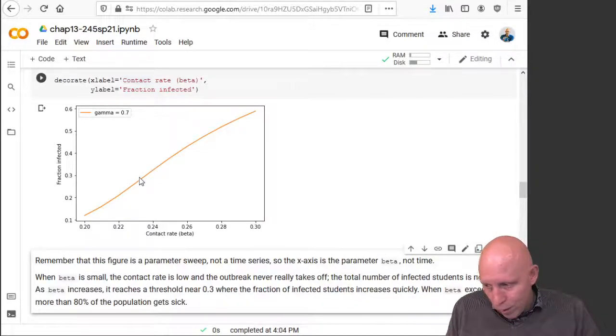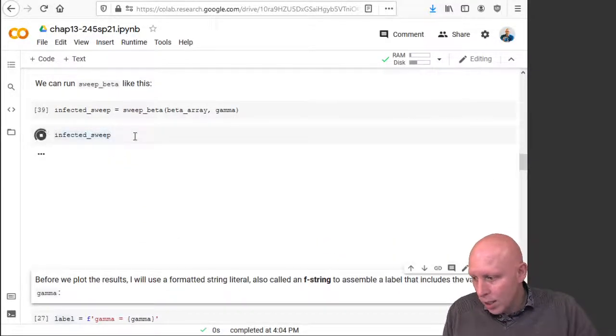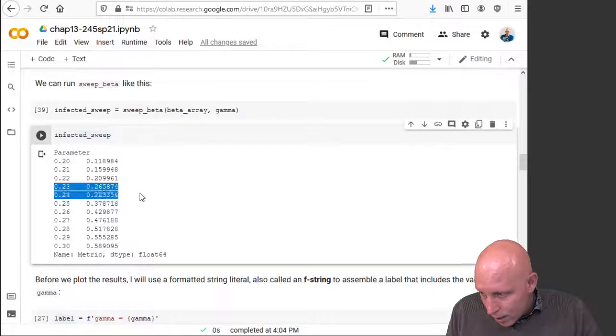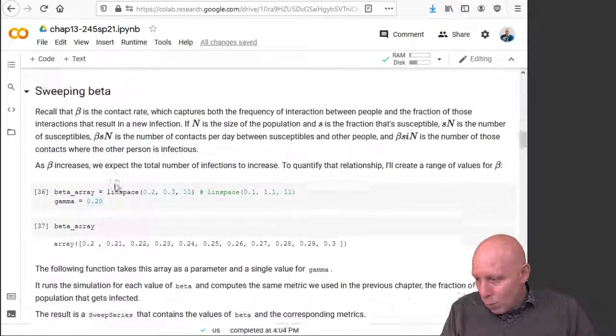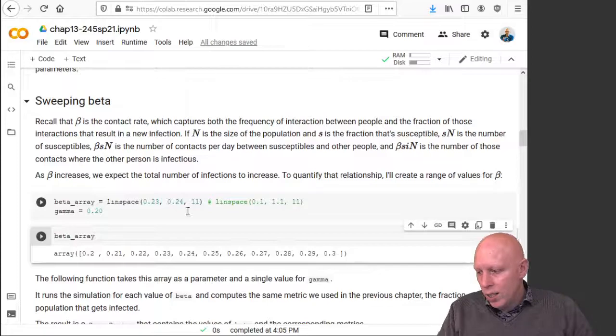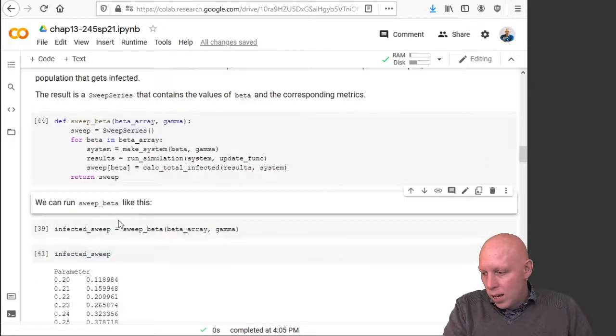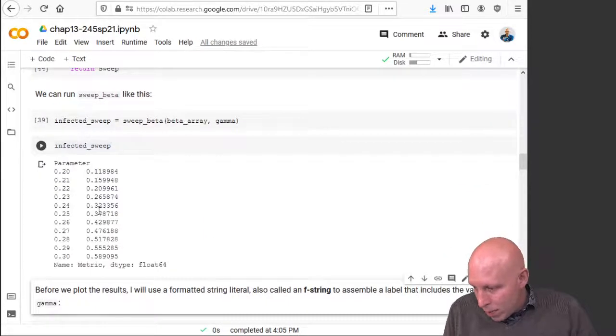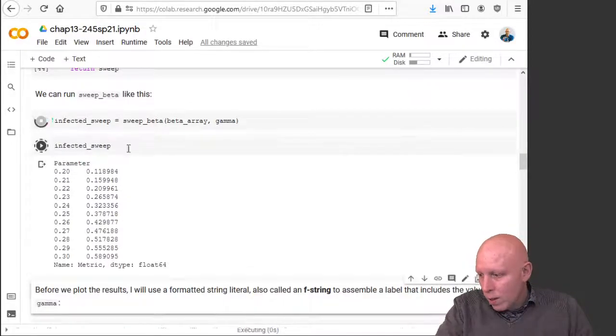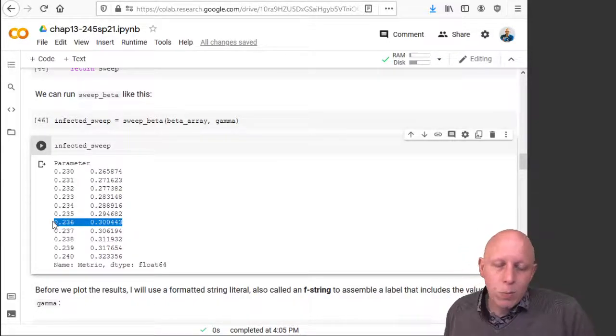Because it's the value that when you plug it in, you get close to 0.3 as the percentage of the population that was infected. And if we look at what our chart actually looks like, we can see we're between 0.23 and 0.24. If you want to get really close, we could do this again, where we have the beta array go between 0.23 and 0.24. This is refining it even more. We run our code and see that probably the best value we could guess is about 0.236. So if we choose beta equal to 0.236, gamma equal 0.2, then 30% of the population gets infected.